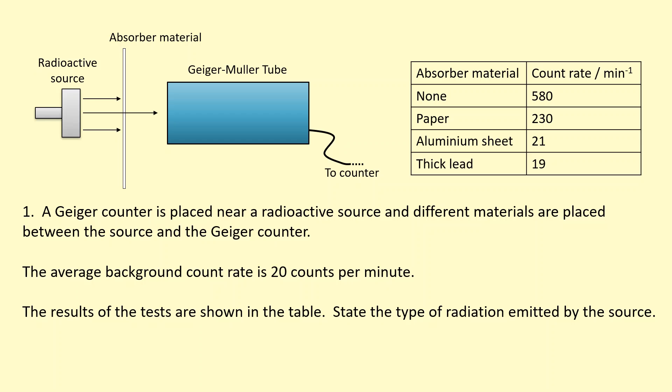This setup here can be used to determine the type of radiation that's being emitted by this radioactive source. The radioactive source can emit any combination of alpha, beta or gamma. We're going to use some absorber materials in front of it and we're going to go from no absorber material all the way to paper, aluminum and then thick lead.